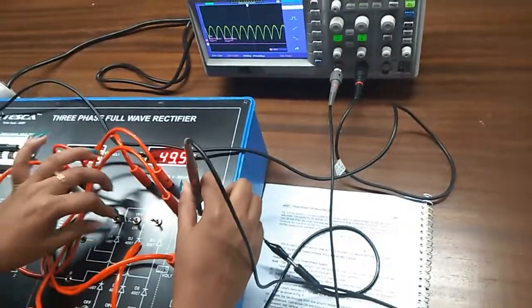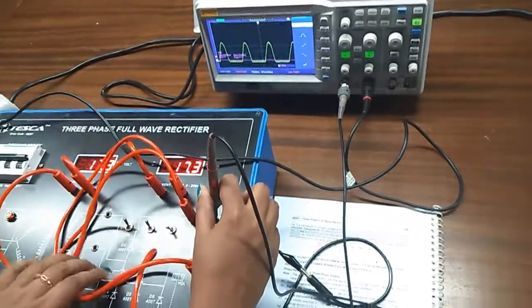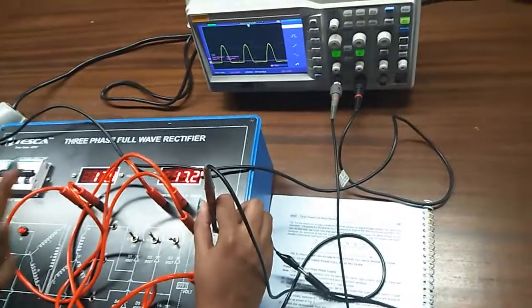Like this you can turn off one of the diodes in any combination and you can compare the wave form here in the CRO.